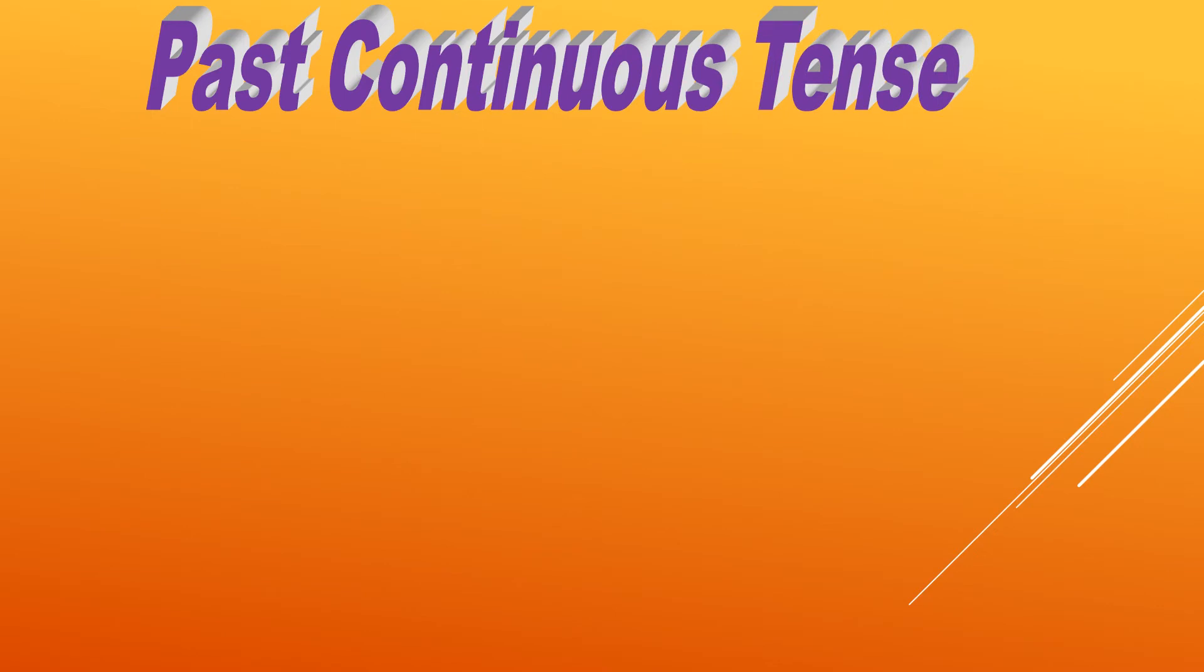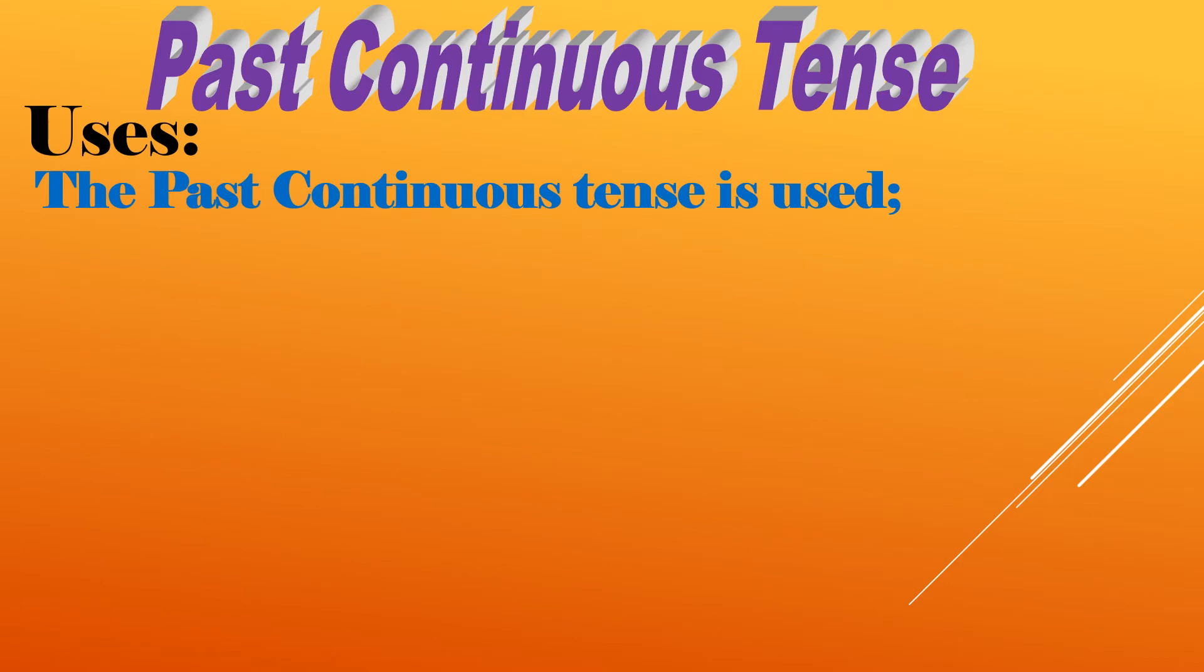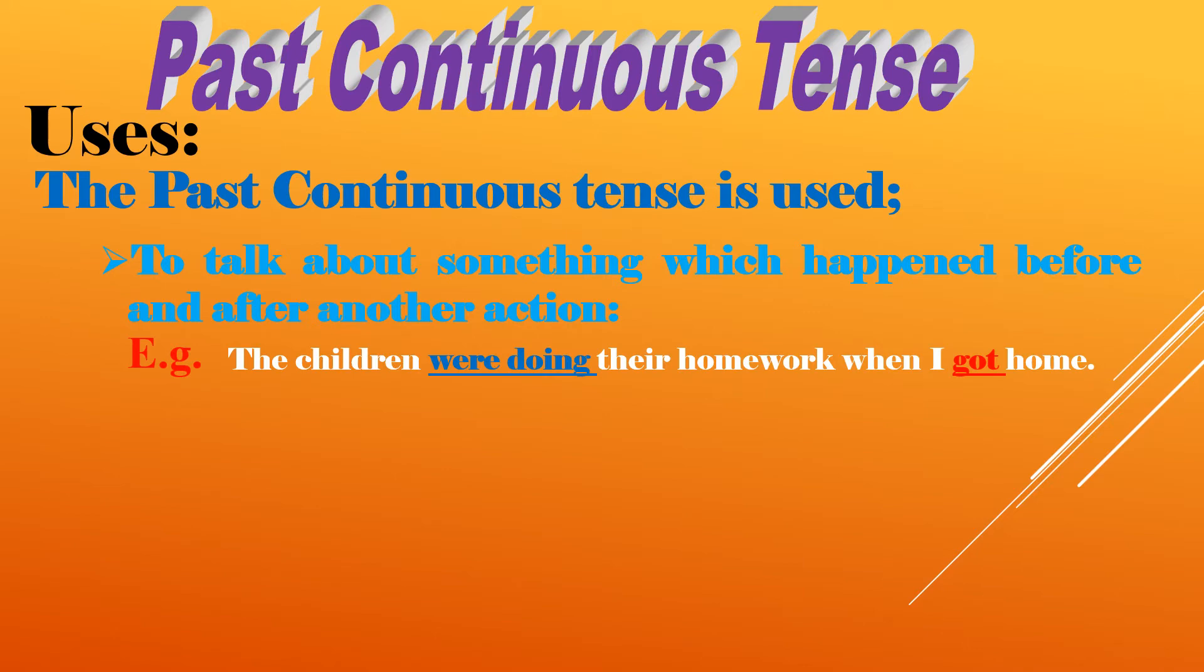Our targeted tense for this week is past continuous tense. Let's have a look at the uses of this tense. The past continuous tense is used to talk about something which happened before and after a specific time. Here is an example: the children were doing their homework when I got home. Number two, it is also used to talk about something that happened before and after a specific time. Here is an example: it was eight o'clock, I was writing a letter.